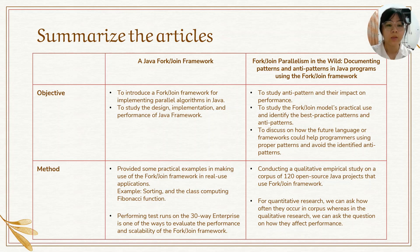For quantitative research, we can ask how often anti-patterns occur in the corpus, whereas in the qualitative research, we can ask how they affect performance. Then, analyze the data by summarizing the occurrence of patterns and anti-patterns, and determine what factors affect performance. At the end, make a conclusion and interpret the results.